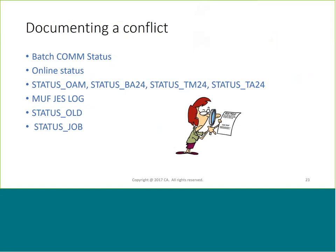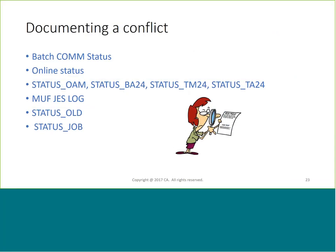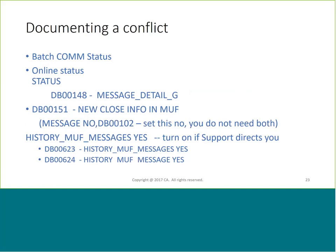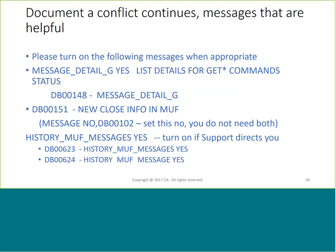How do you document a conflict and track down who's doing what to whom? Batch comp status is not the same as online status - comp status in batch gives more details. The status underscore commands - OAM, BA24, TM24 - are really the same report, just different ways of issuing it. You've got the MUFJS logs with lots of messages. We also have status old and status job, which will be new in 15.1, to help you track down older events or status by job. To get more messages, most are defaulted off - the next slide documents how you can turn some on to help diagnose who is waiting on whom.